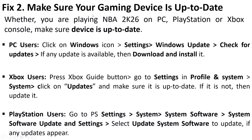Fix 2 is to make sure your gaming device is also up to date. PC users: click the Windows icon, go to Settings, then Windows Update, and check for updates — download and install any available. Xbox users: press the Xbox Guide button, go to Settings, then System, click on Updates, and make sure it is up to date.